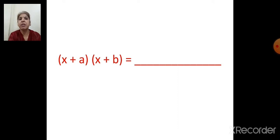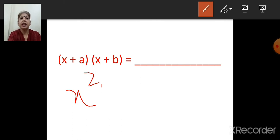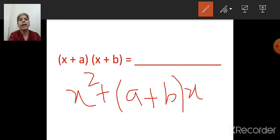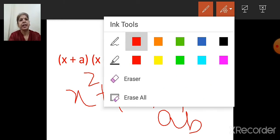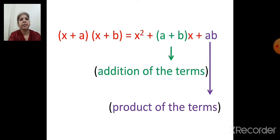We have done this important formula: x plus A, the whole bracket, multiply by x plus B. Here the x term is common. The answer is x plus A, the whole bracket, multiply by x plus B, is equal to x square plus A plus B, the whole bracket, multiply by x, plus AB. This is the formula we have studied.